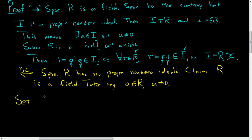Set I equal to the set of RA, R in R. In other words, this is the ideal generated by A. Now, I just said it was an ideal, but we're going to go ahead and prove it in this problem. So claim I is an ideal.